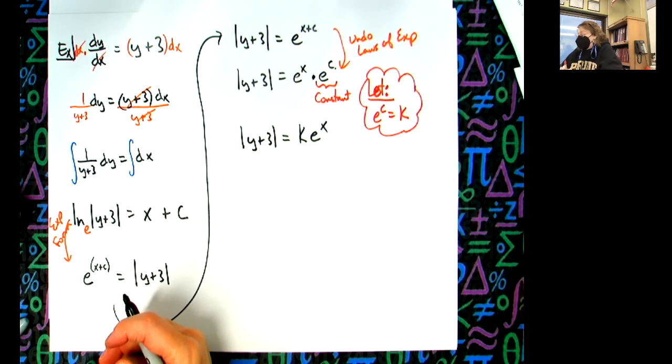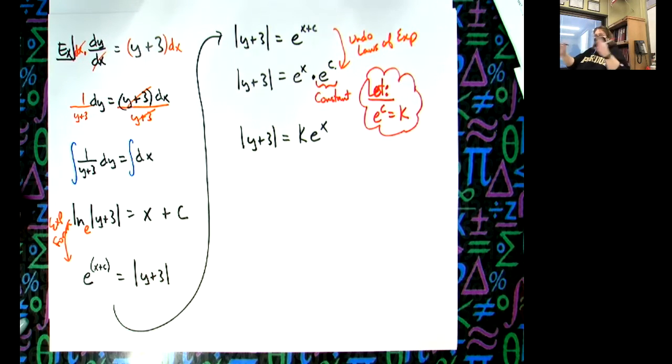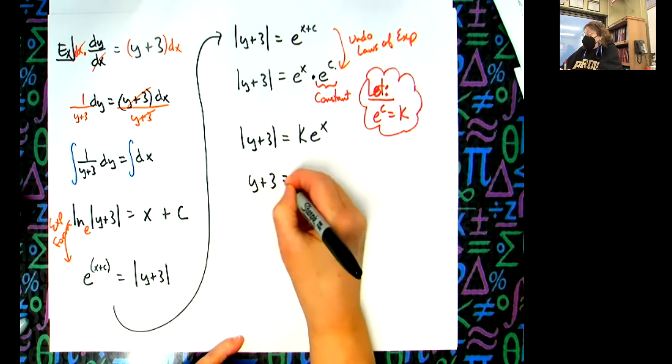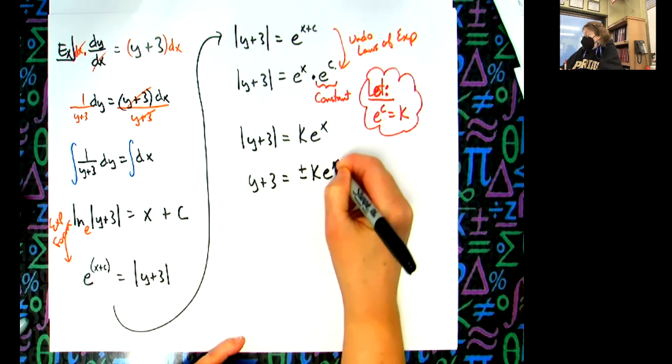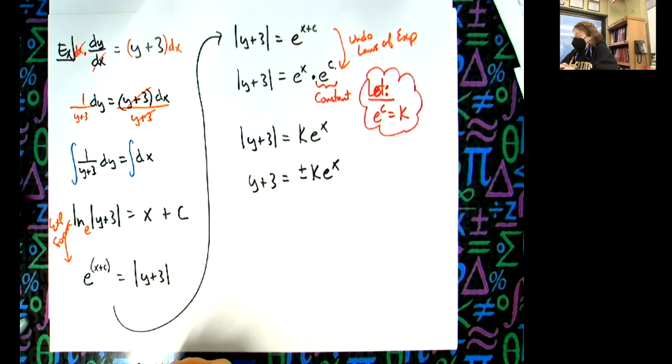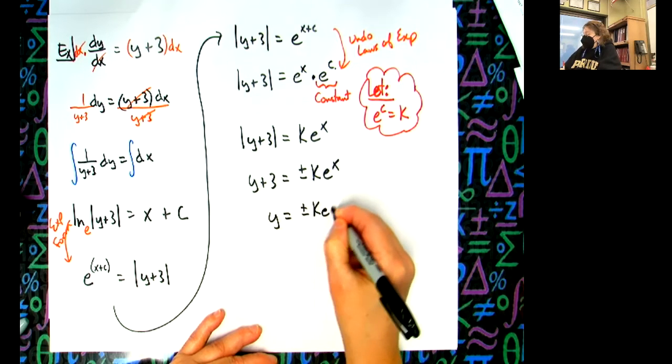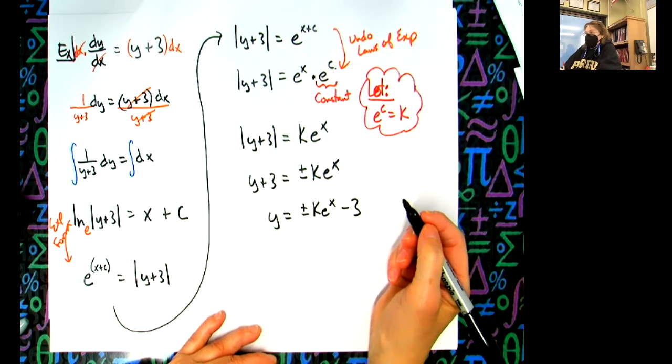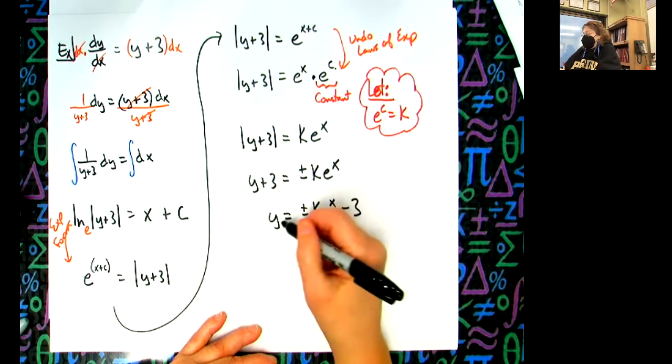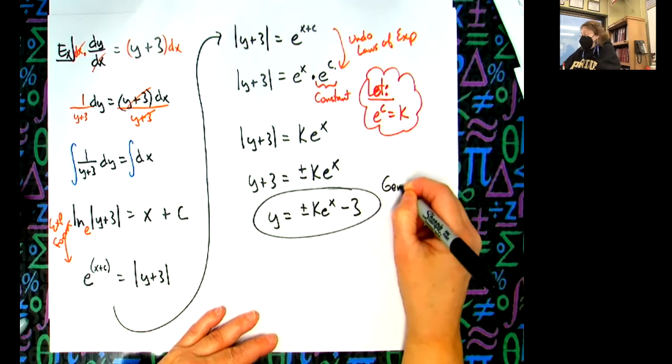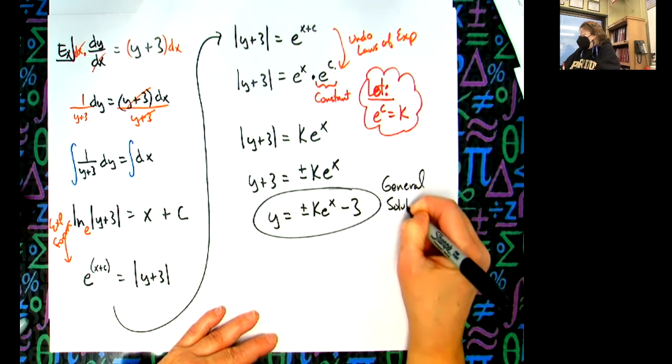Now I want to address the absolute value bars. Isn't that the distance from zero? So positive or negative, plus or minus. So if I want to be able to legally drop those, then all I got to do is add a plus or minus on the right-hand side. Now, if I solve for y by subtracting three from both sides, I'm going to have y equals and then I'm going to have plus or minus ke^x minus three. Do I now have a general solution where I could plug in if I knew x and y, I could plug in an x and y at a point and then I could find k. So at that point right there, I have a general solution.